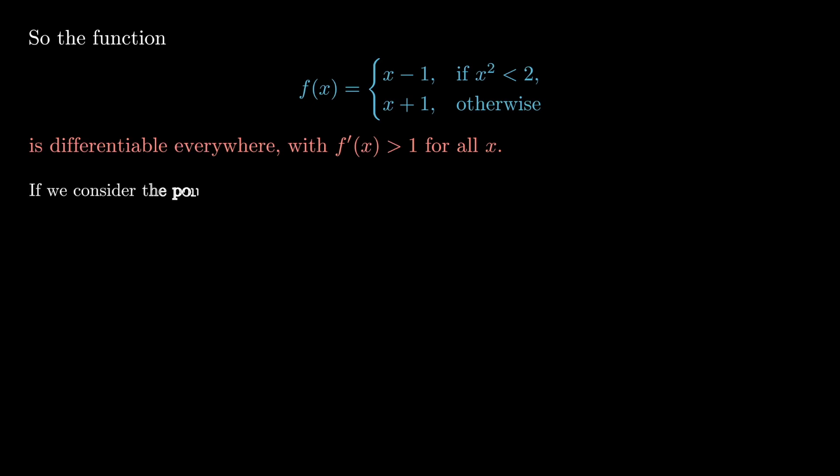Now if we consider the point x equal to minus 8 on 5, then squaring this is just going to be 64 on 25, and that's 2.65 which is greater than 2. In particular, this formula now tells us that f of minus 8 on 5 is minus 8 on 5 plus 1, but that's just minus 3 on 5.